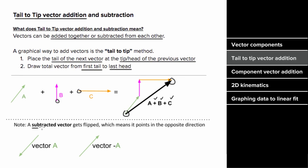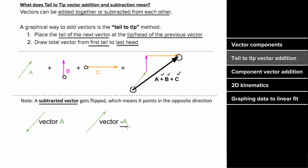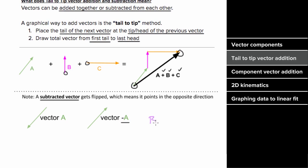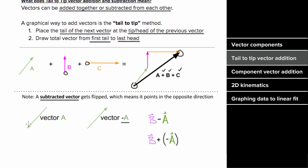If you need to subtract a vector, you can still use vector addition — simply add the negative of that vector. If you have vector b and want to subtract vector a, think of it as adding negative vector a. The way you find negative vector a is by taking vector a and placing the arrowhead on the other end of the vector.